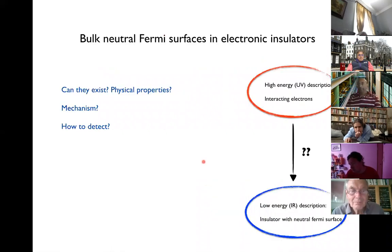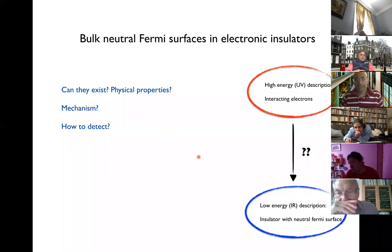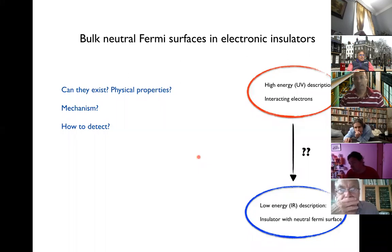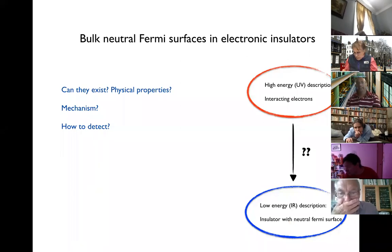We are interested in the possibility of a bulk neutral Fermi surface in an electronic insulator. The questions we can ask are: first, can such a thing exist at all? What are its physical properties? What is a mechanism that will stabilize such a state of matter, and how do we detect it? In condensed matter physics, our microscopic description is non-negotiable — we only have our interacting electrons and phonons. What we seek is the situation in which starting from this UV description, we go to the low-energy IR description and end up with an insulator that has a neutral Fermi surface.